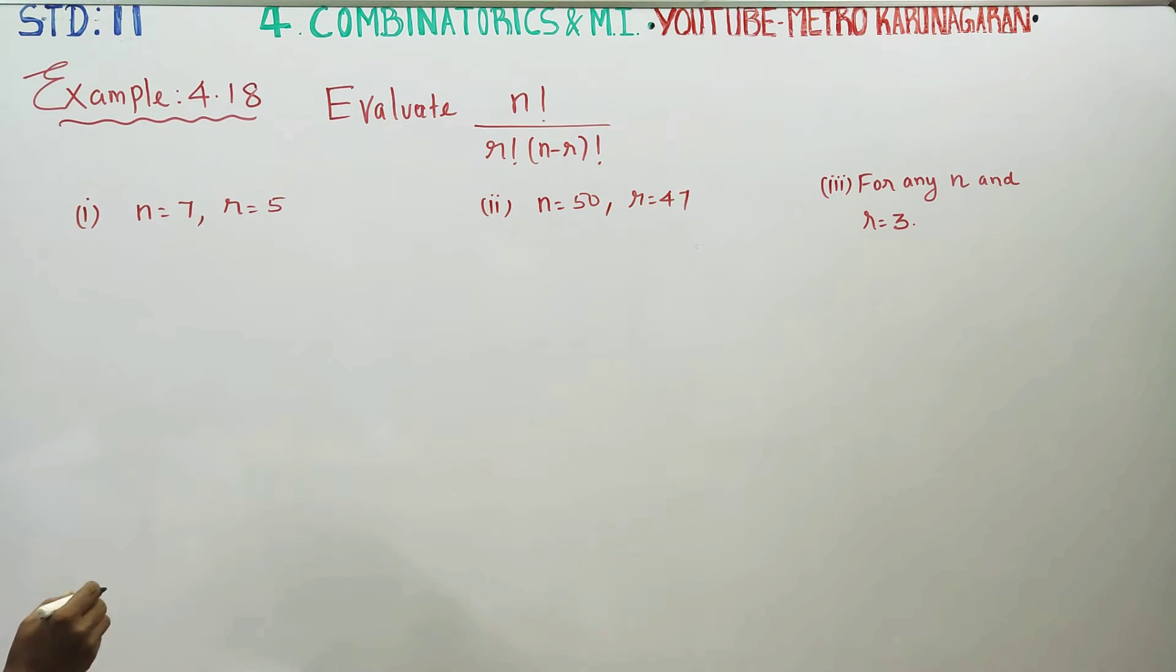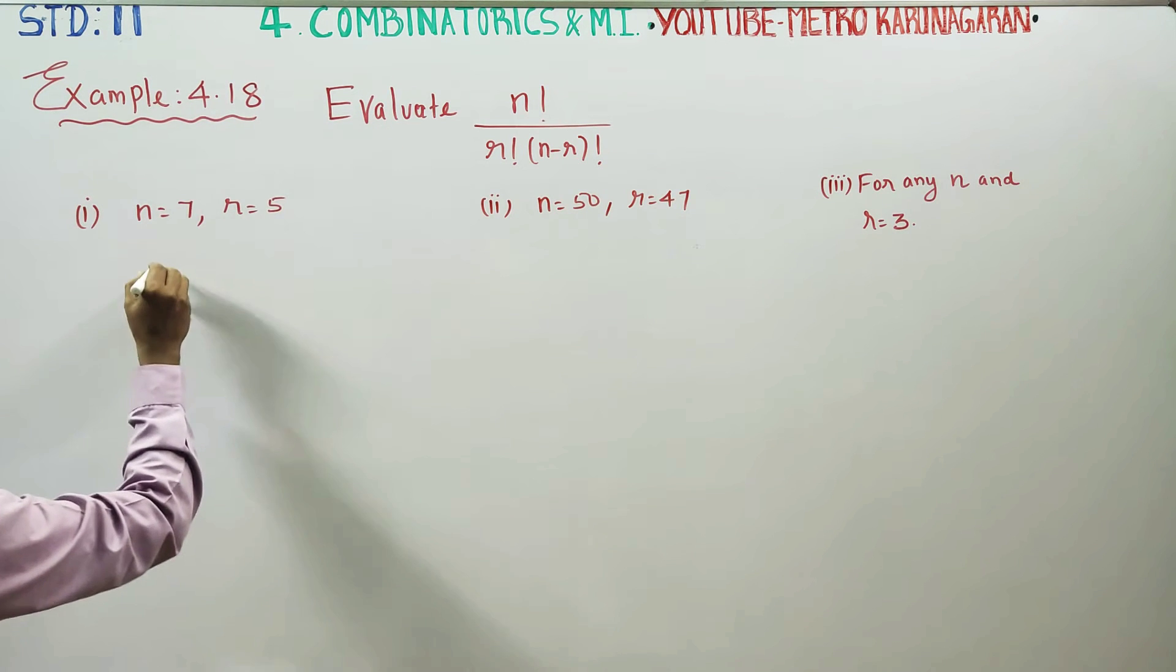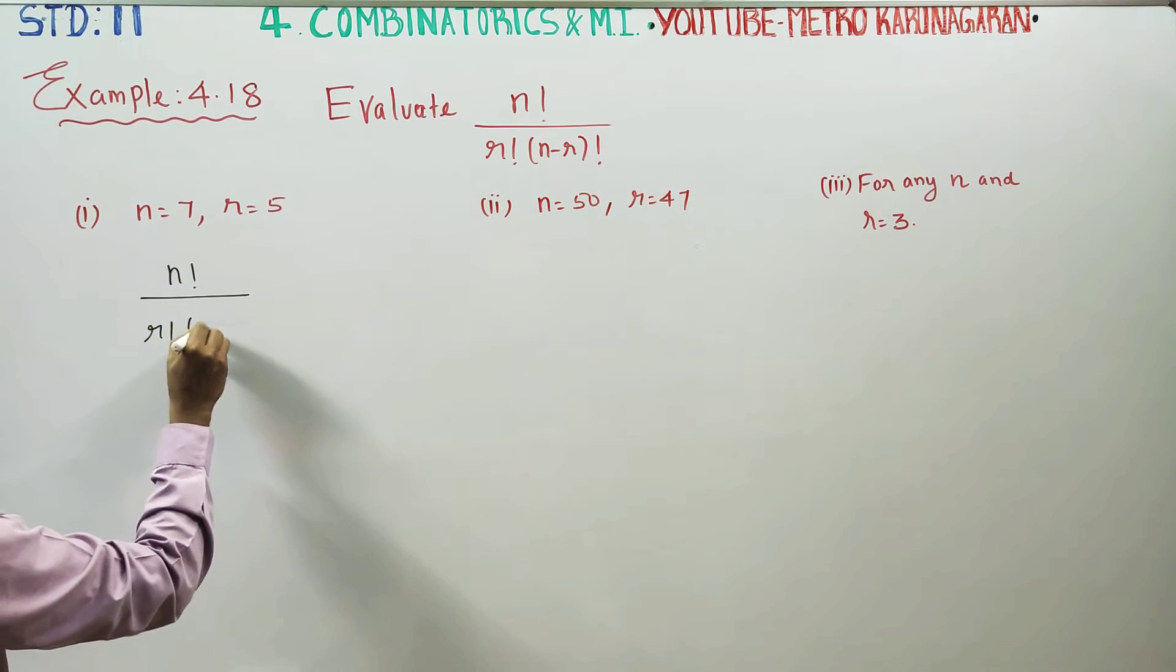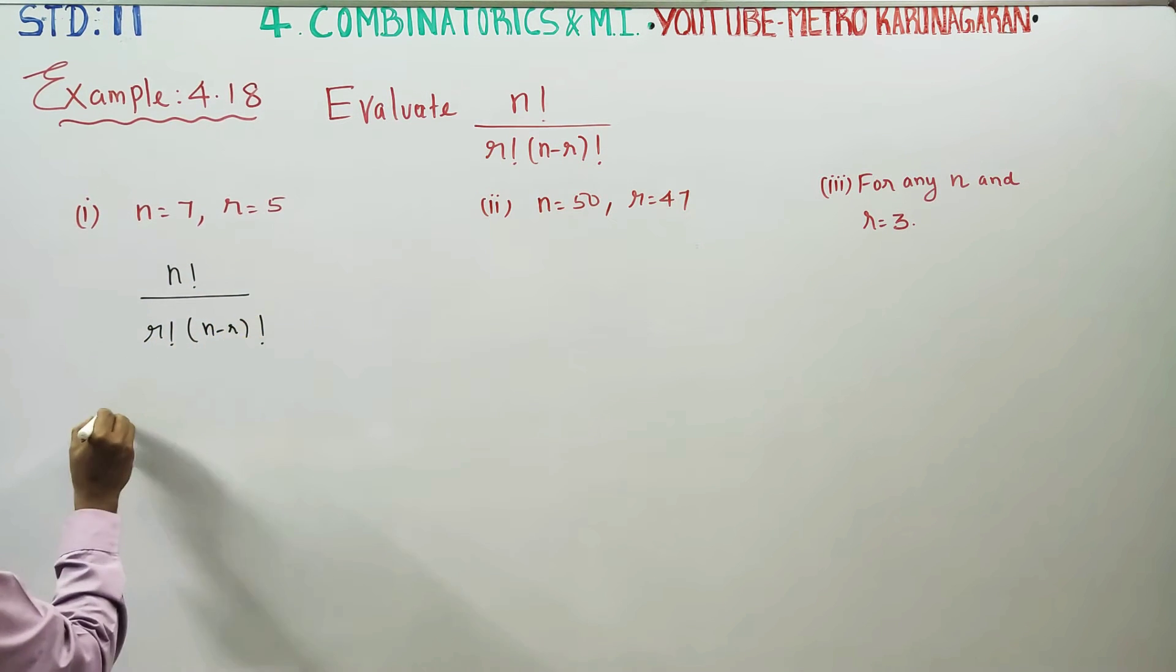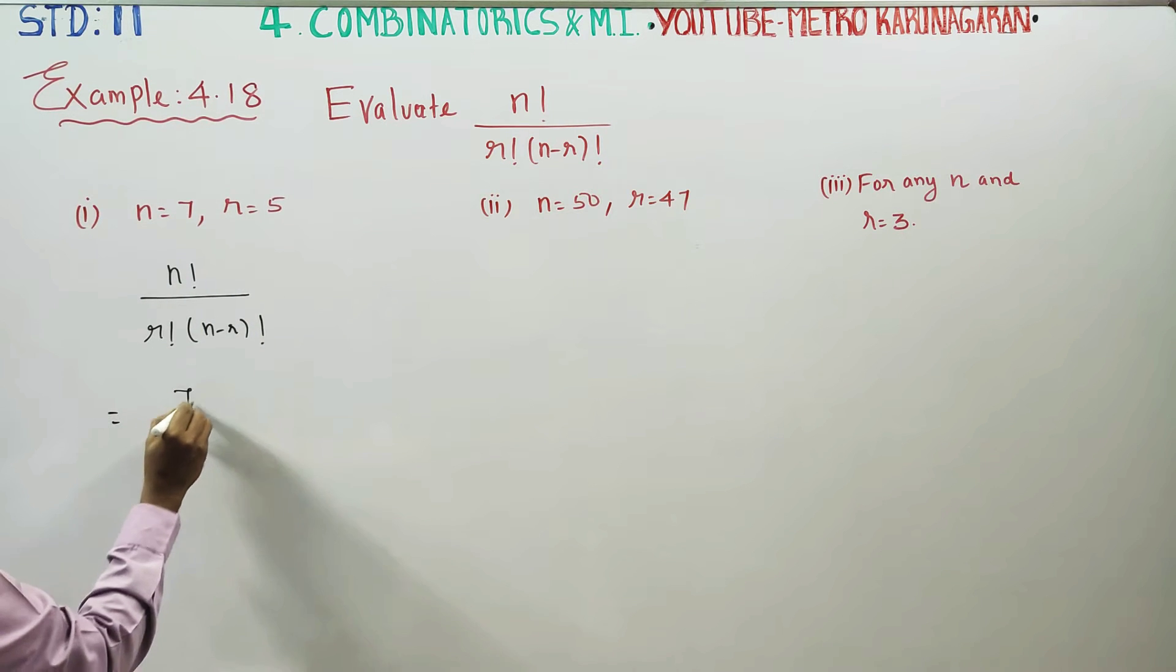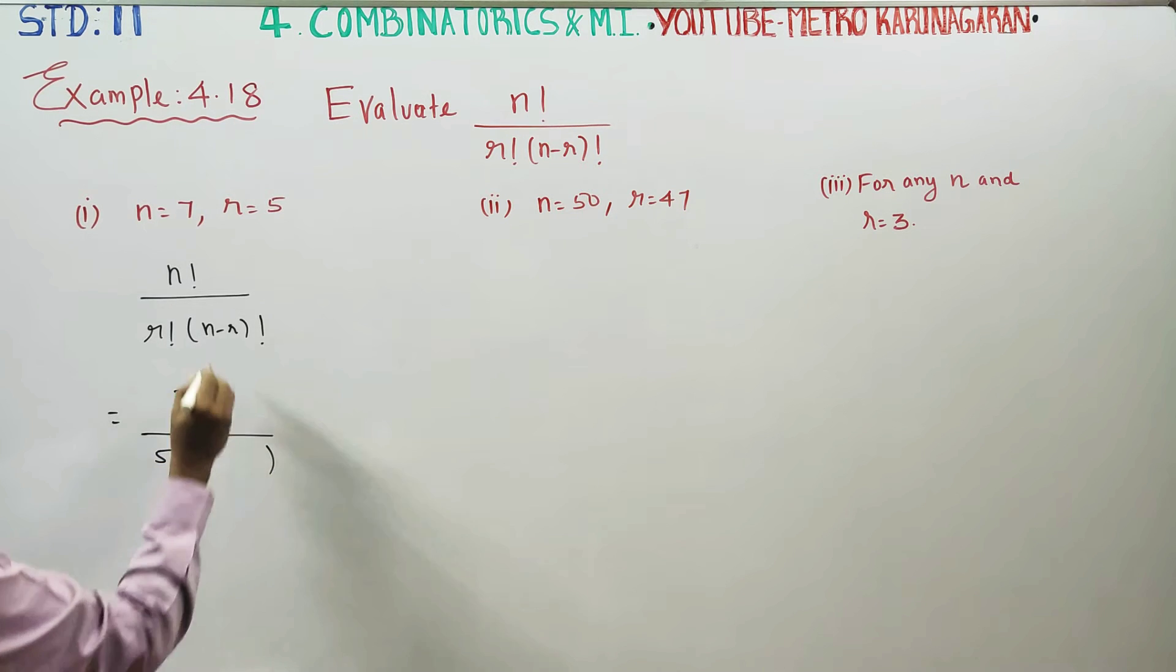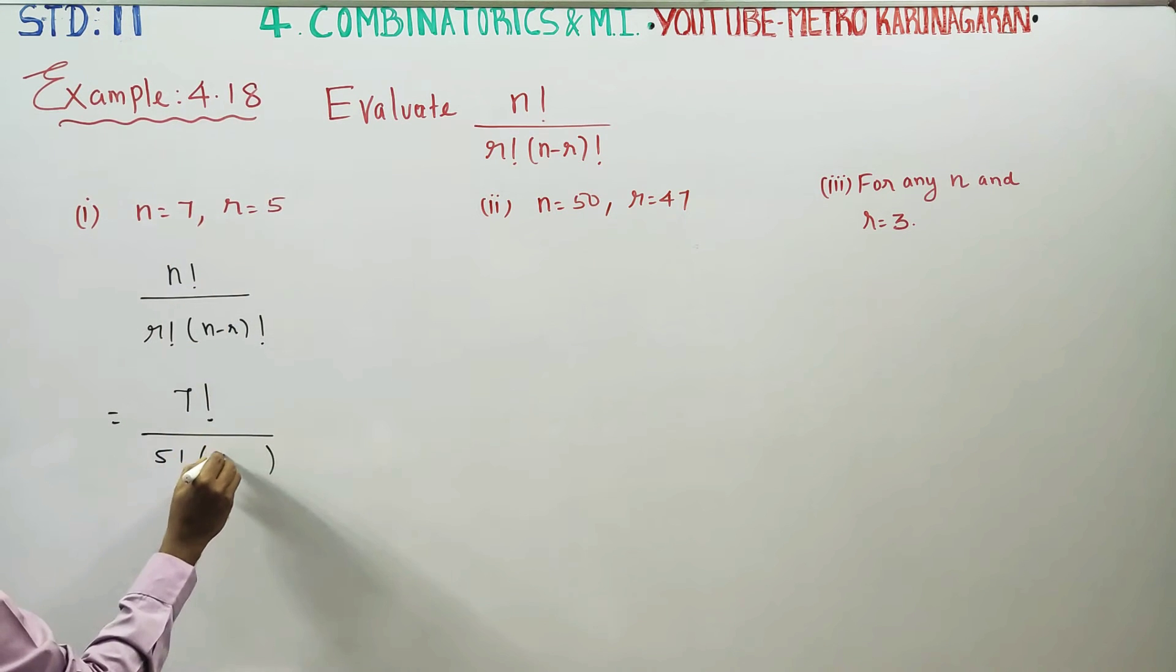n is equal to 7, r is equal to 5. In the formula, n factorial by r factorial into n minus r factorial. n is equal to 7, then 7 factorial by r is 5, 5 factorial. n minus r is 7 minus 5 factorial.